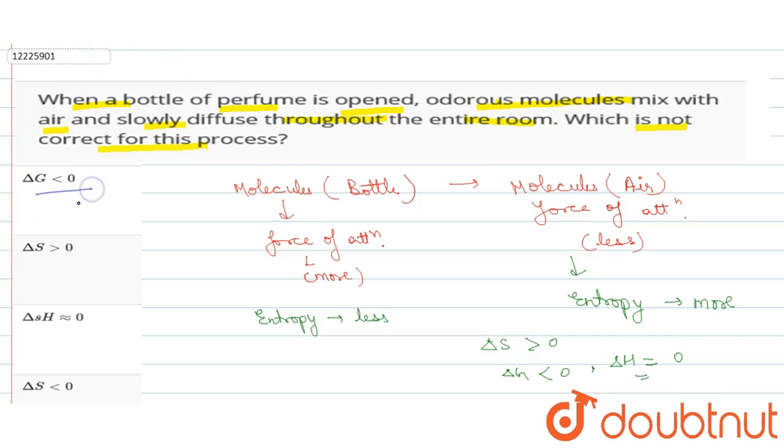Delta G value is less than 0, which is negative. This means it's a spontaneous reaction - the molecules spontaneously diffuse out from the bottle. So delta G is negative.